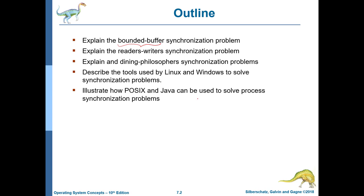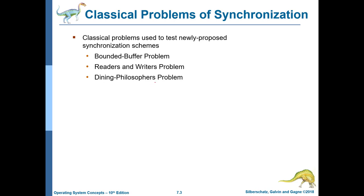You can also look at these in the original Silberschatz, Galvin, and Gantz book, which has a lot of real-world examples from the most popular platforms. These three classical problems in the world of synchronization — bounded buffer, readers-writers, and dining philosophers — can all be solved using the primitives that we learnt in the previous lecture, chapter 6.